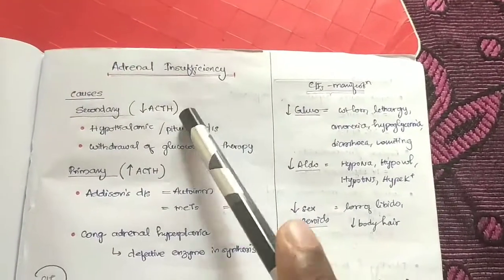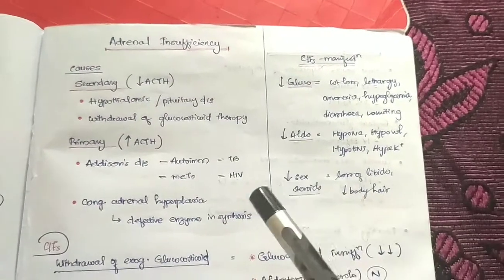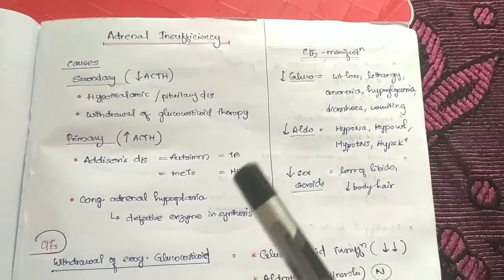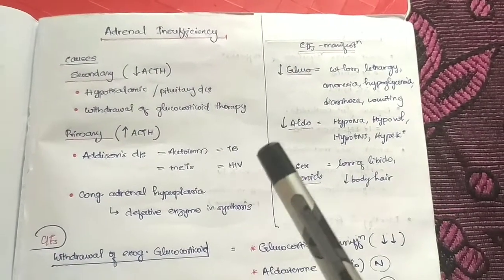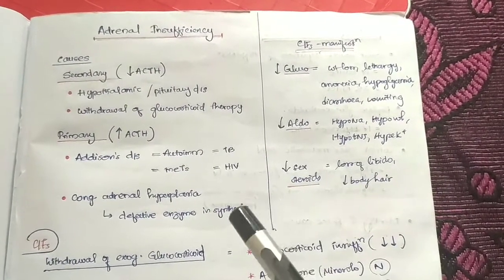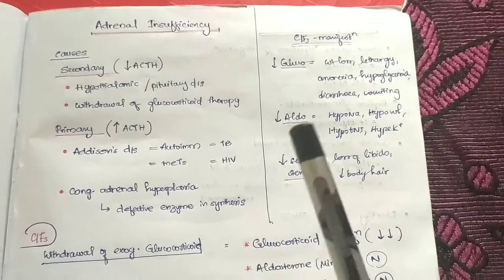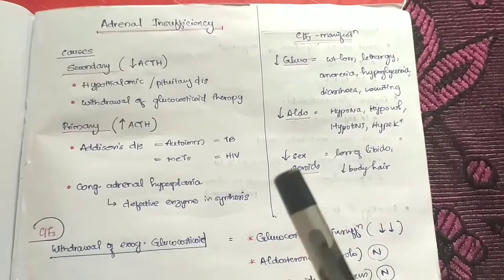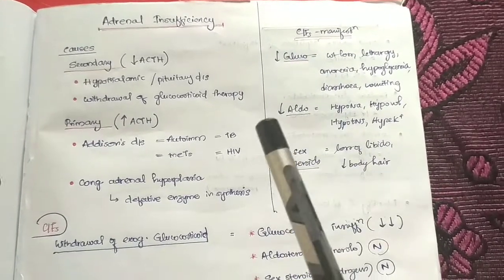Briefly, that covers adrenal insufficiency. This is suitable as a short note in the exam, based on Davidson's table.